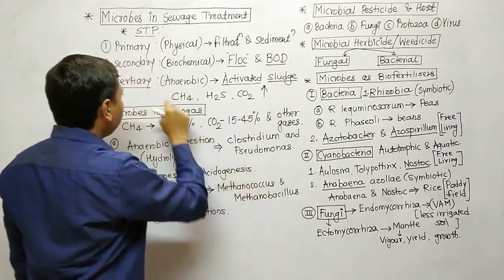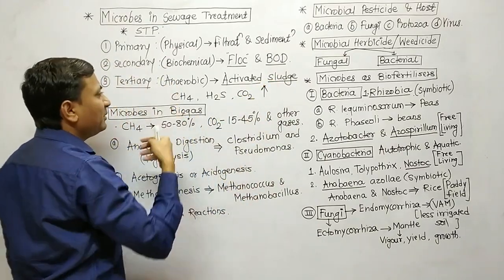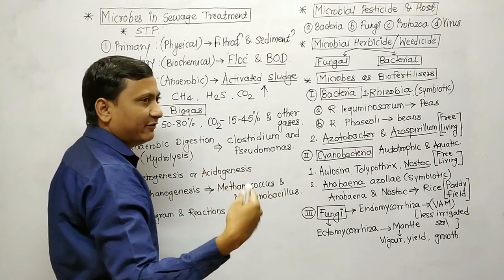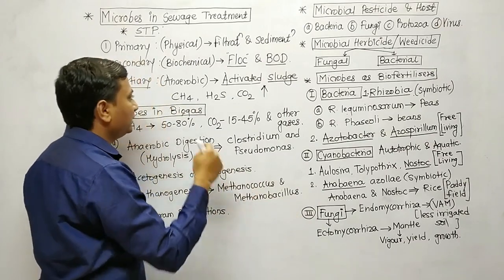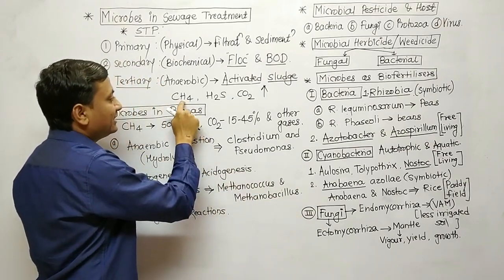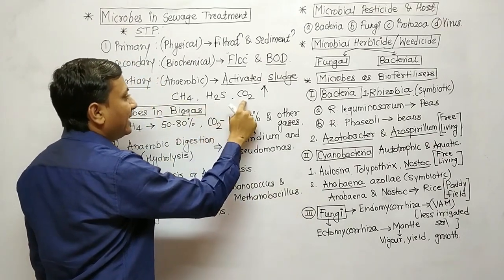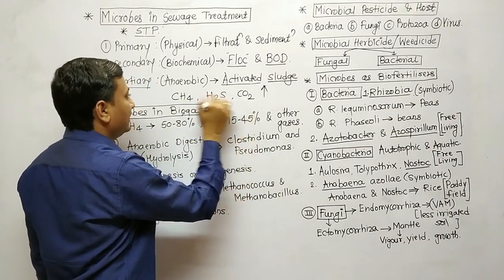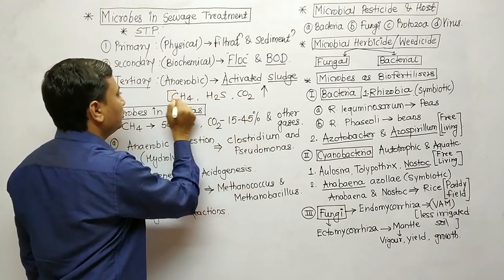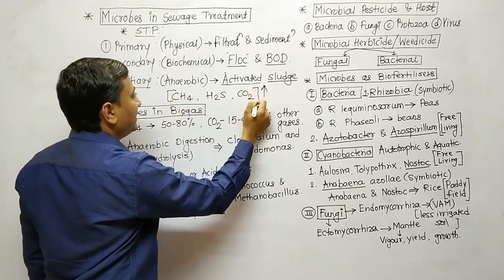The sediment formed in treatment is called activated sludge. Activated sludge is nutritious and can be used as a fertilizer. In the anaerobic treatment, gases are released into the environment: these are methane, hydrogen sulfide, and carbon dioxide.